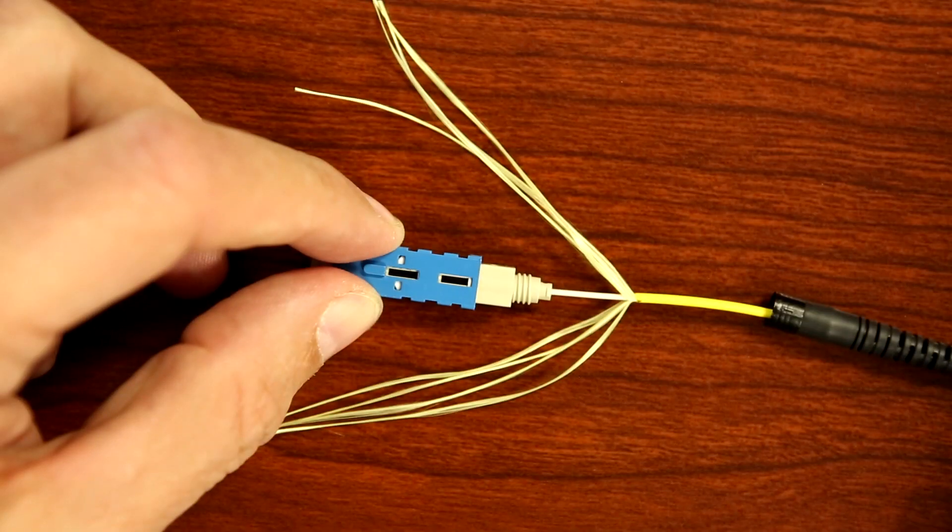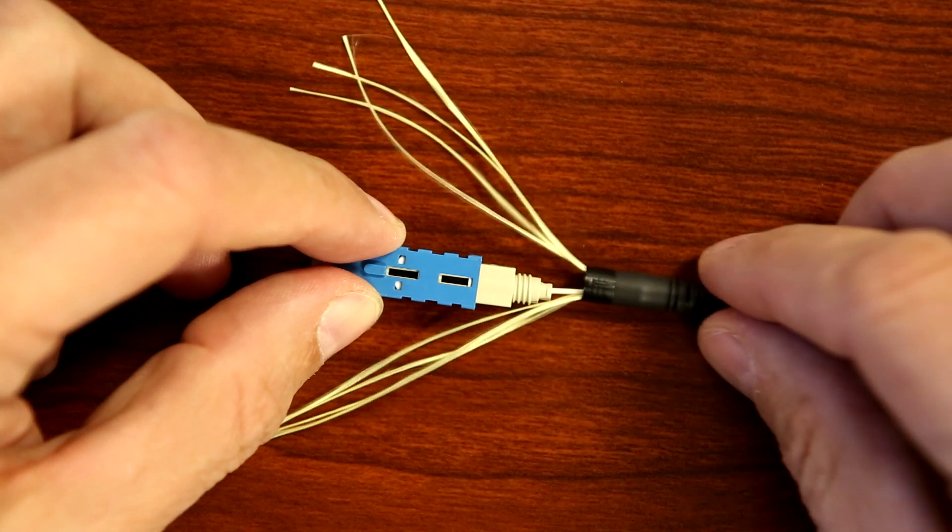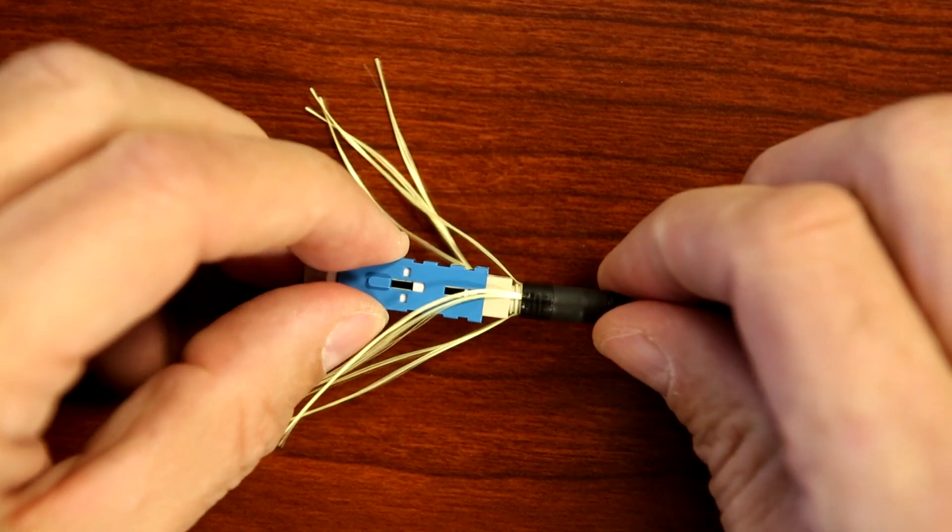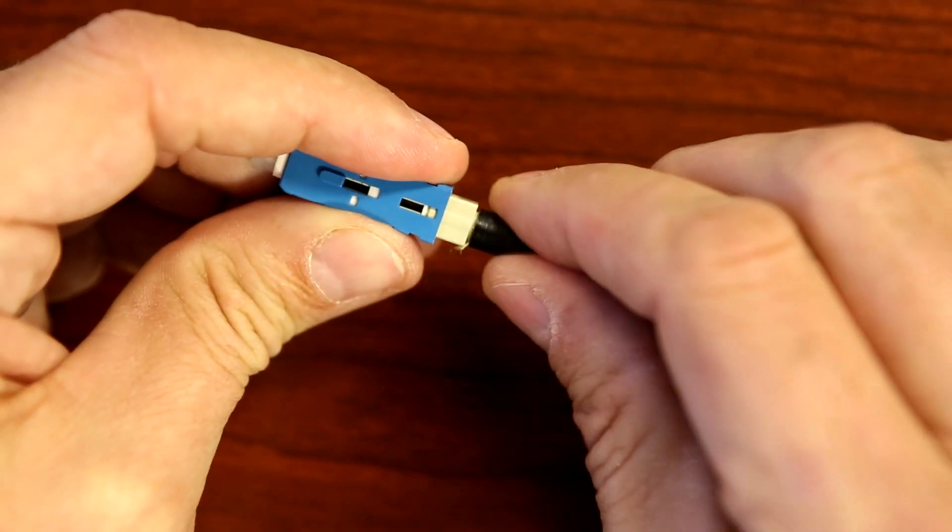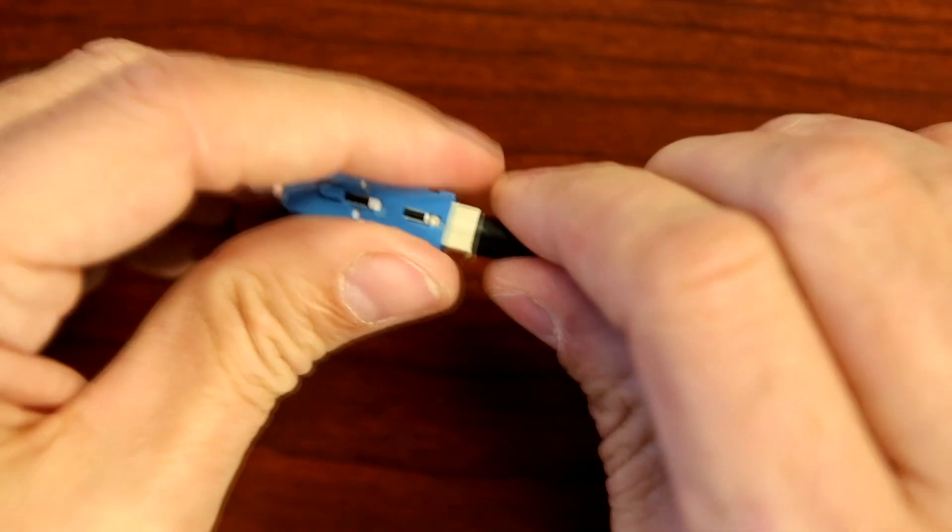Divide the kevlar evenly on both sides. Then screw the boot on halfway. Trim the excess kevlar using the kevlar scissors. Now thread the boot on tightly and the termination process is complete.